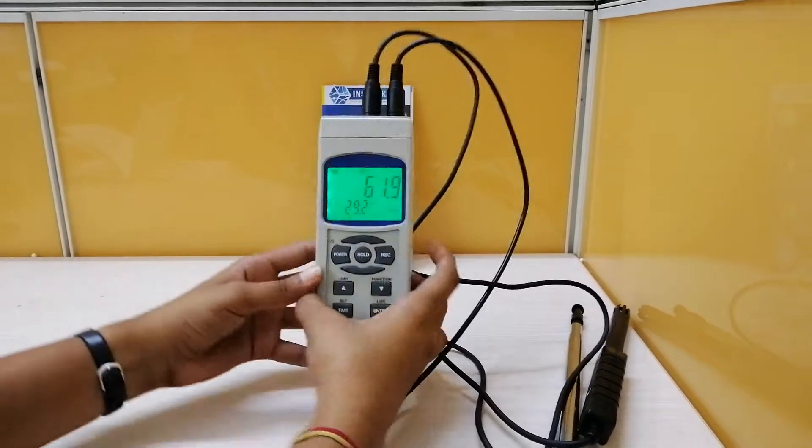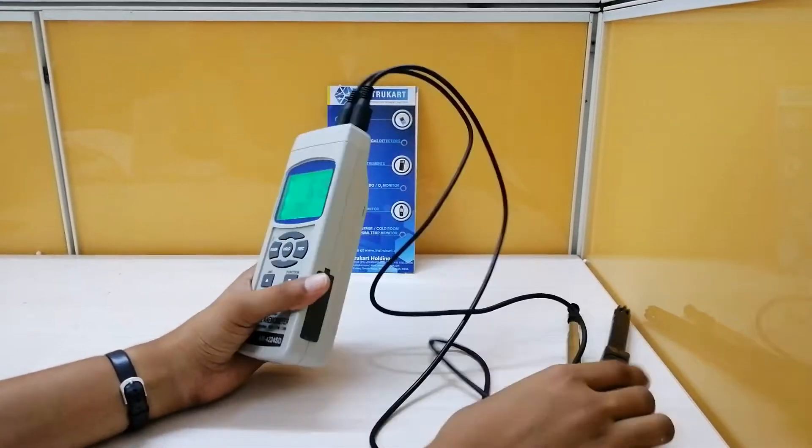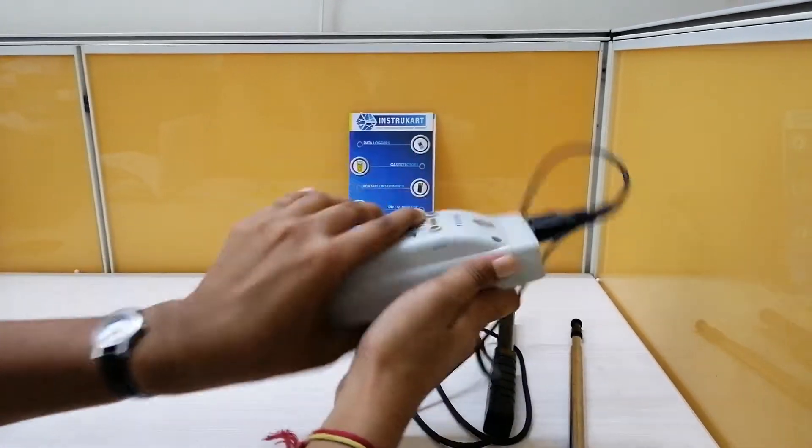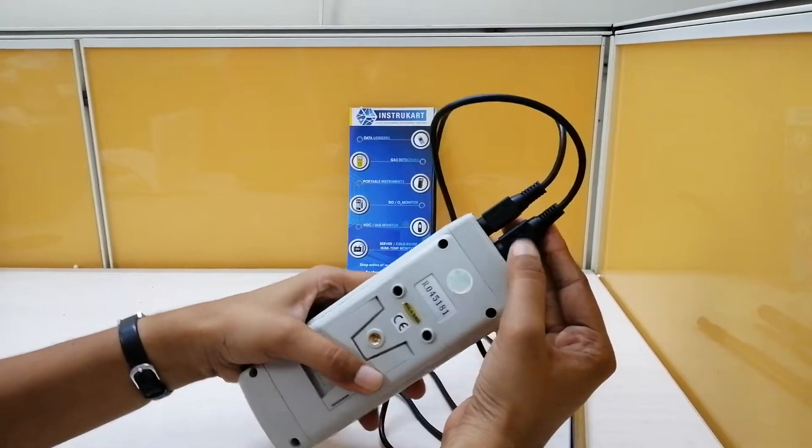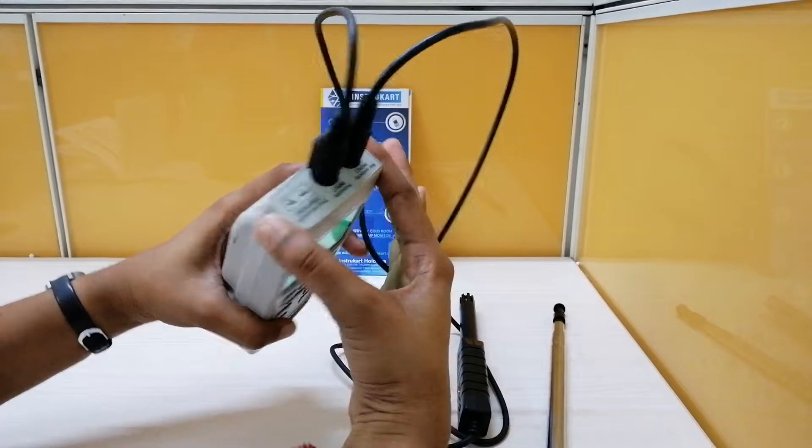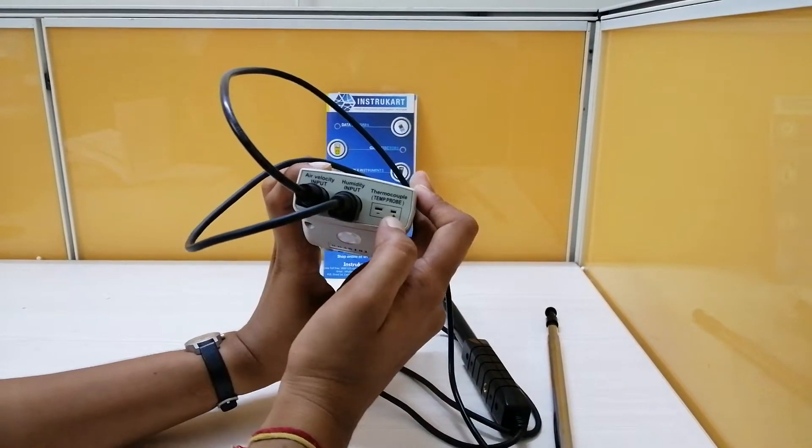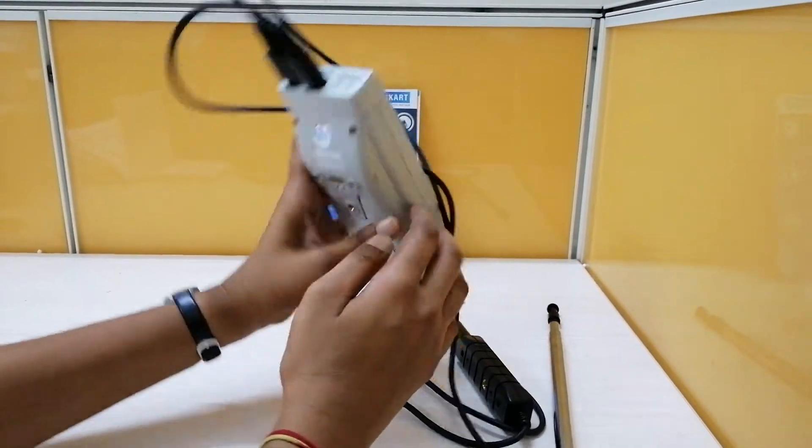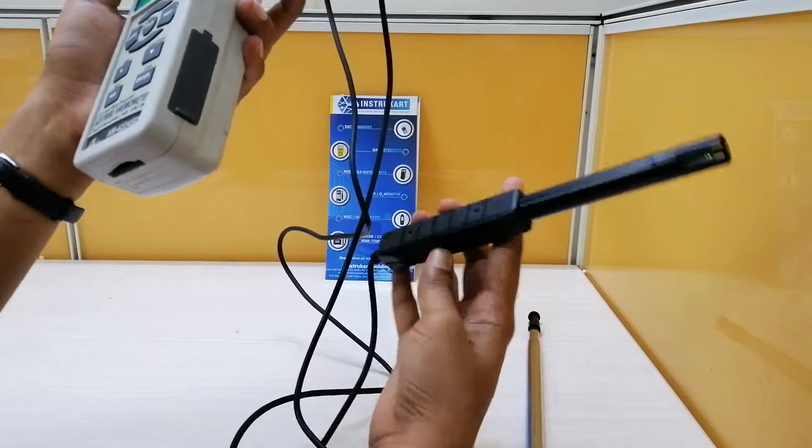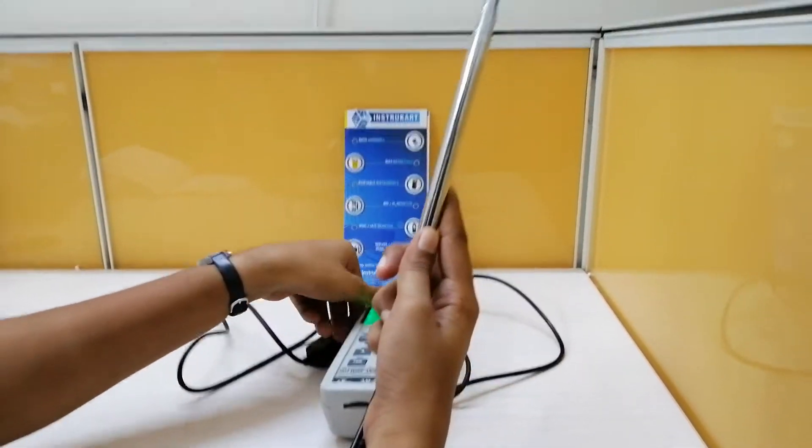You can see here, these are the keys as I was told, and these are the probes. You can see here there is an arrow indication. In the same way you have to put these probes. And these are the provisions for thermocouples as I was told. There is a provision for J type and K type thermocouple. This is the probe for humidity and temperature, and this is a probe to measure the airflow.